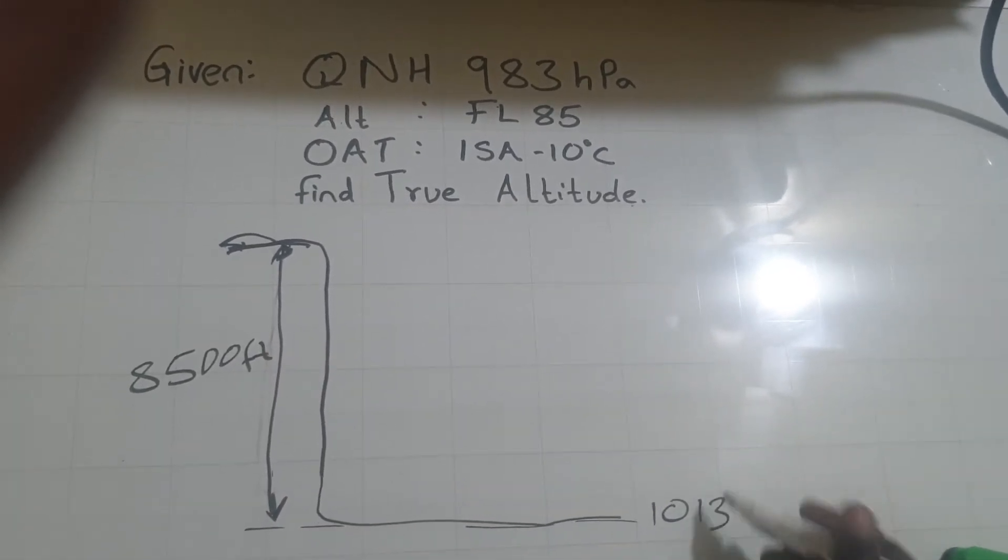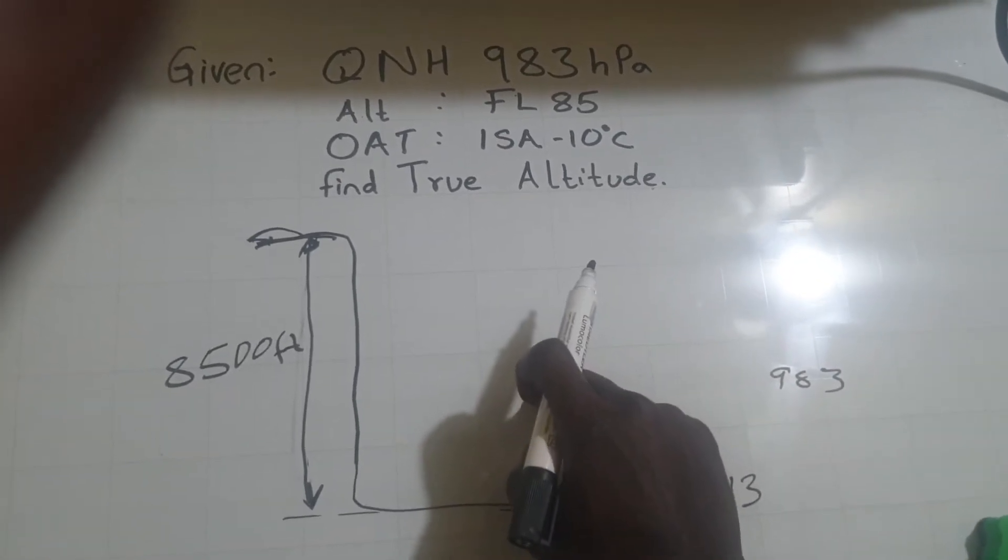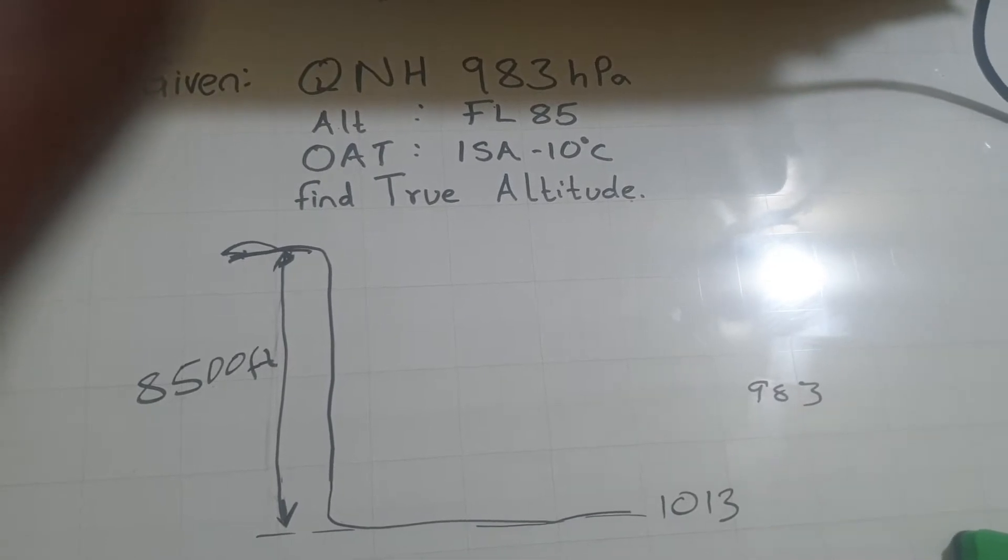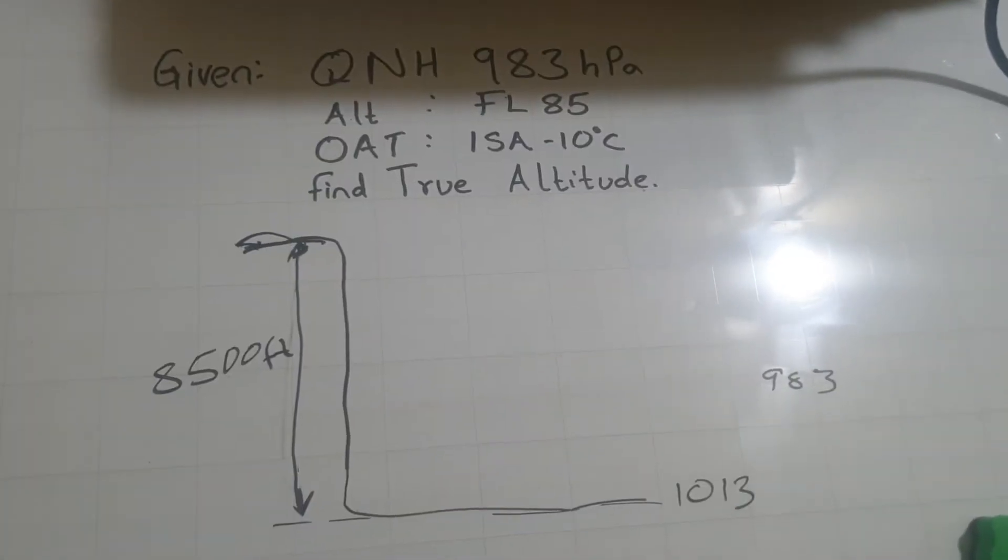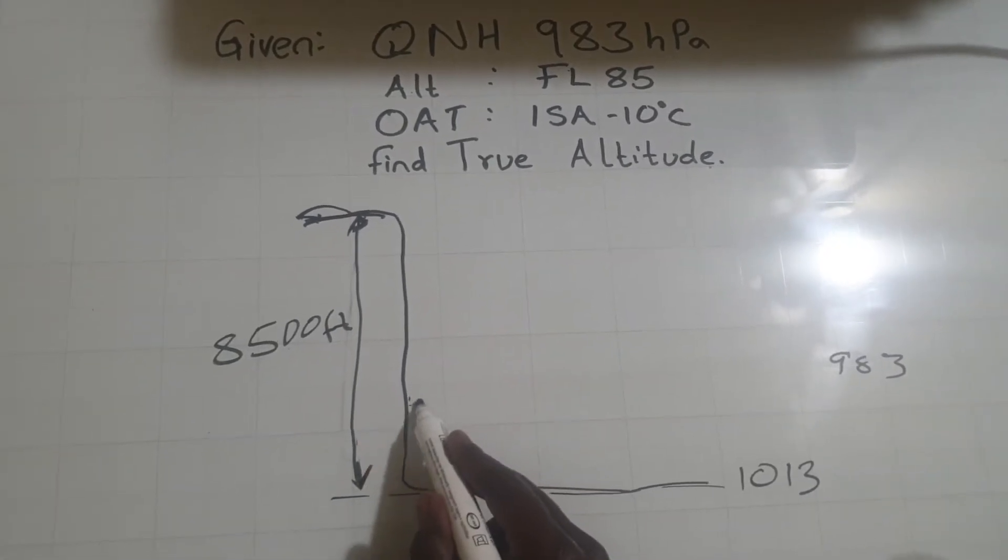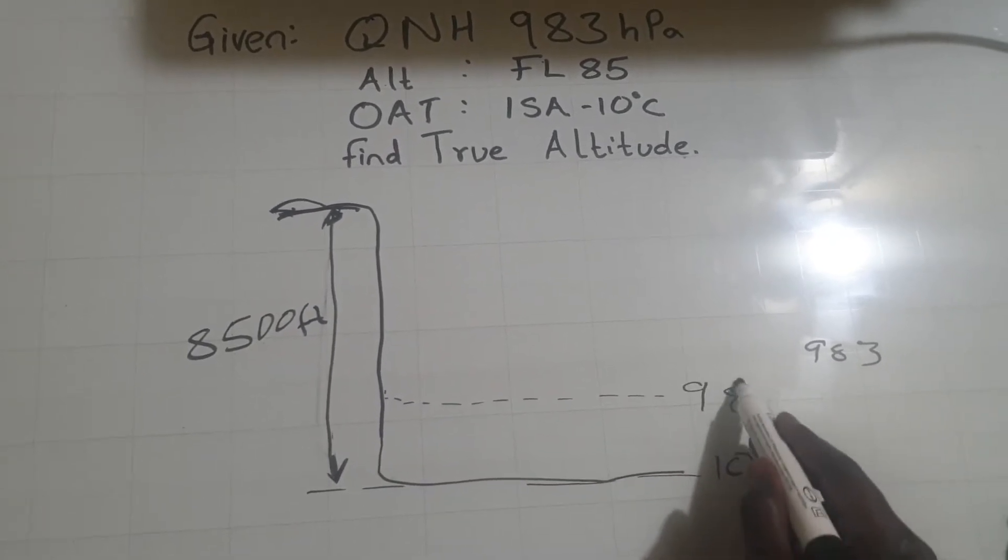But your QNH is 983. So is 983 supposed to be higher than this or lower? Ask yourself this. Where do we have low pressure? As you go up or as you go down? Obviously as you go up, the pressure becomes lower. So the QNH should be somewhere here. So this is 983.